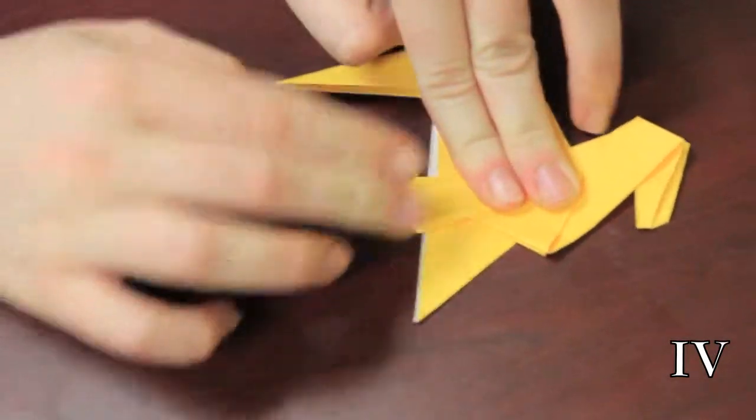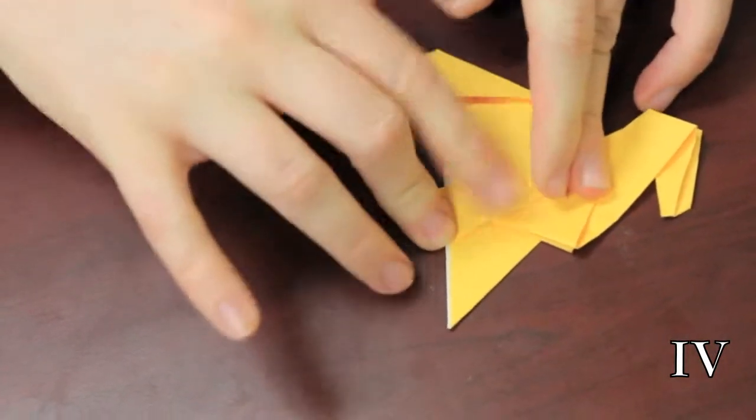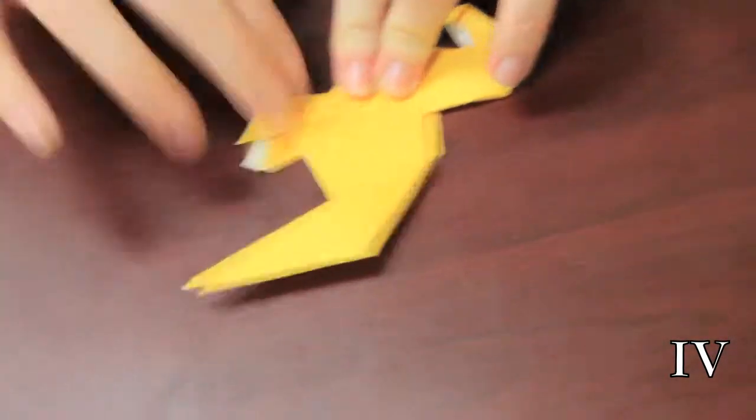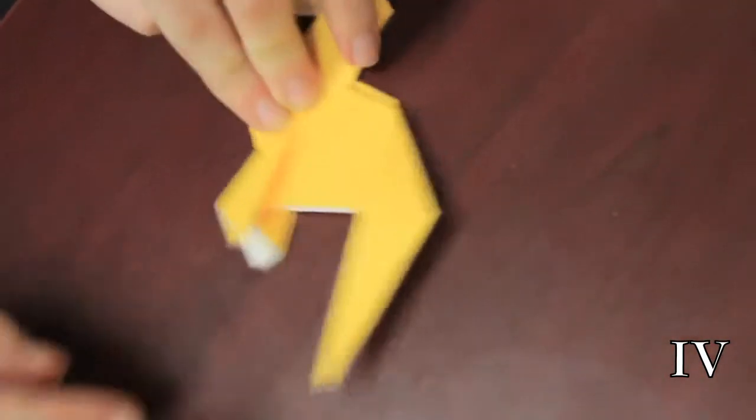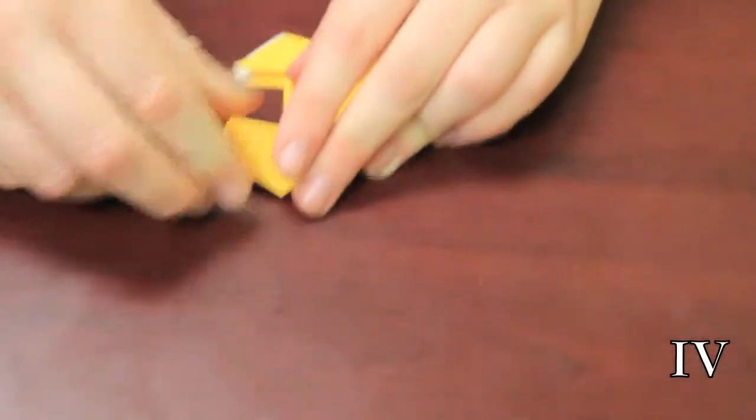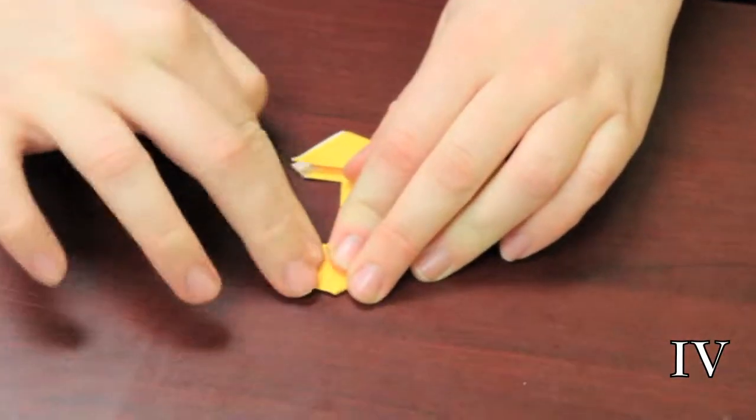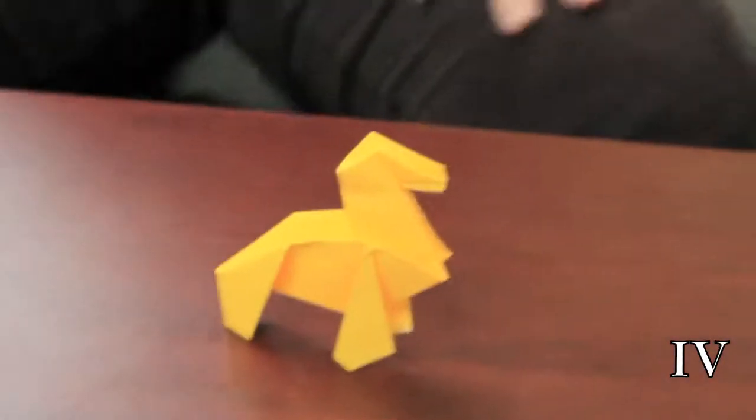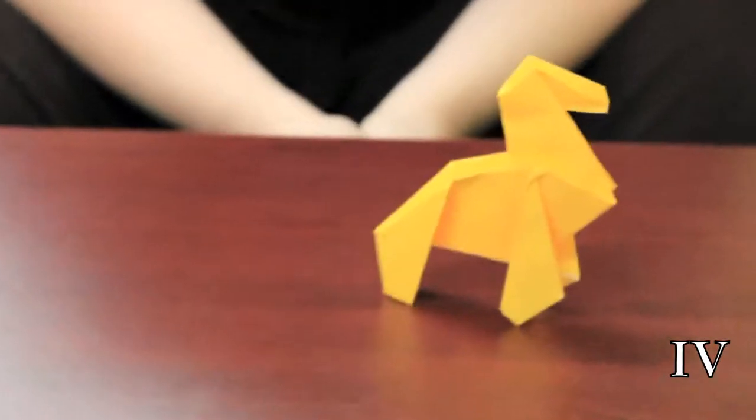Next you fold the front end of the horse's legs down so it looks like that. And then you fold the legs in so that they look a little more standable. And there you go. You have your horse.